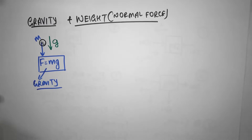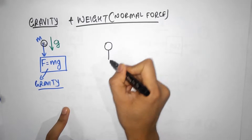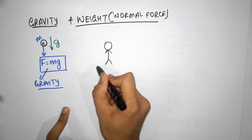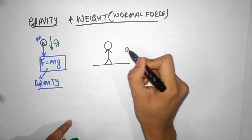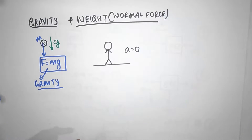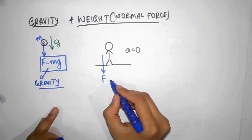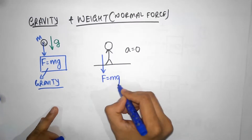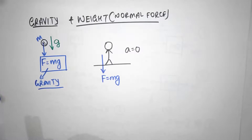Now let's try to understand what normal force is. Suppose you are standing on the ground. Clearly you are not accelerating — your acceleration is zero. But there is a gravitational force acting on you downwards, which is m times g. But net force on you must be zero because there is no acceleration. That means something is cancelling this gravitational force.